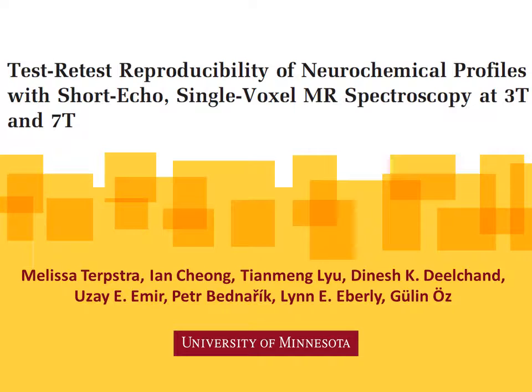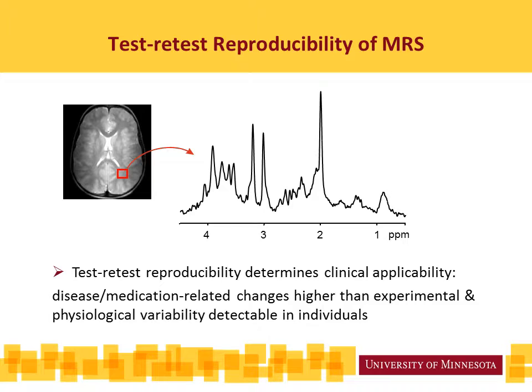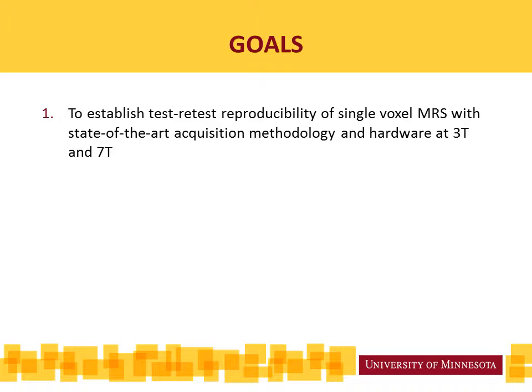Hi, this is Guinness. I'd like to summarize the highlights of our recent MRM paper where we focused on test-retest reproducibility of single voxel MRS at 3T and 7T. We focused on test-retest reproducibility because that is an important factor that determines the clinical applicability of the method — namely, only those disease or medication related changes will be detectable in individuals that are higher than experimental and physiological day-to-day variability.